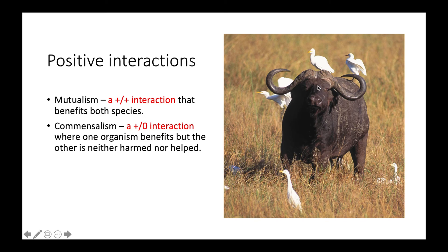For example, consider the cattle egret. As cattle moves through grass, it kicks up bugs. The cattle egrets eat those bugs. The egrets are helped by this interaction, but the cattle is neither helped nor harmed — making this a clear example of commensalism.